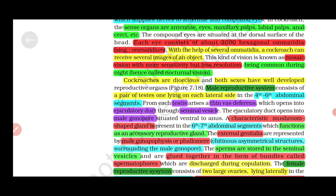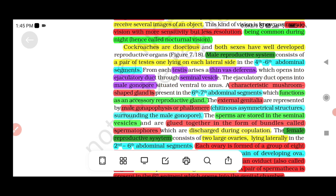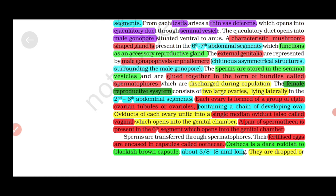Cockroaches are dioecious. Both sexes have well-developed reproductive organs. The male reproductive system consists of a pair of testes, one lying on each lateral side in the fourth to sixth abdominal segments. From the testes, thin vas deferens lead to the ejaculatory duct, seminal vesicle, and male gonopore. A characteristic mushroom-shaped gland is present in the sixth to seventh abdominal segment and functions as an accessory reproductive gland. External genitalia are male gonapophyses or phallomeres, which are chitinous asymmetrical structures surrounding the male gonopore. Sperms are stored in the seminal vesicles, glued together in bundles called spermatophores, and discharged during copulation.